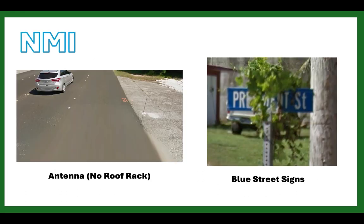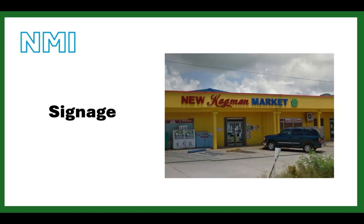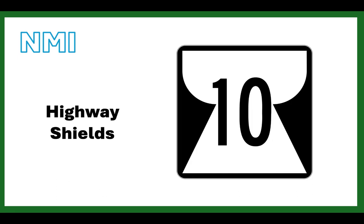The Northern Marianas Islands: antenna, no roof rack, and blue street signs, as mentioned. Coverage is only on the main island of Saipan. Signage can help — for example, 'New Kagman Market' places you in Kagman, a town in NMI. Highway shields exist but are few and far between and aren't marked on the map, so you can't easily scan for them. Highway shields are generally only useful for confirming you're in NMI rather than for pinpointing.